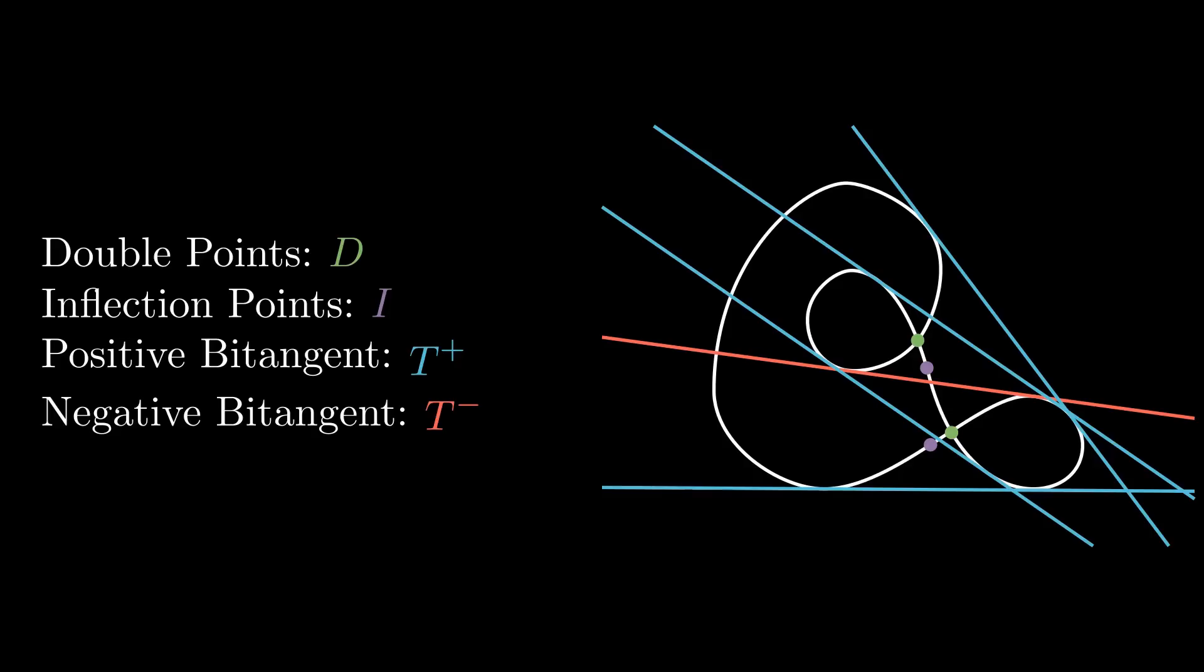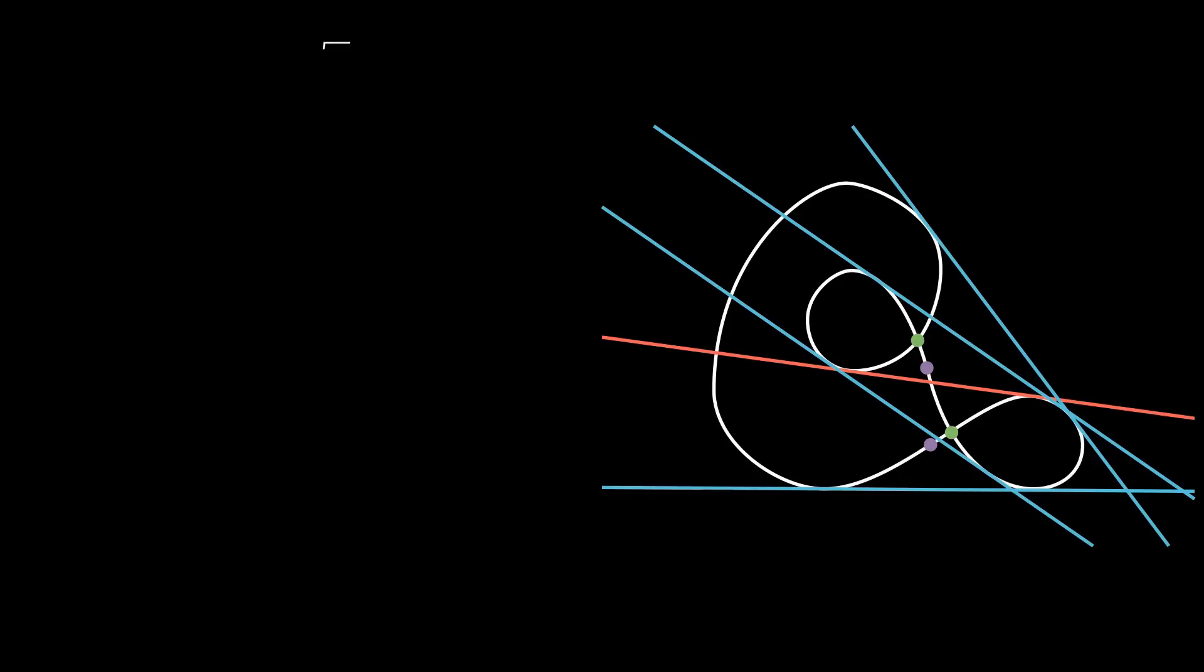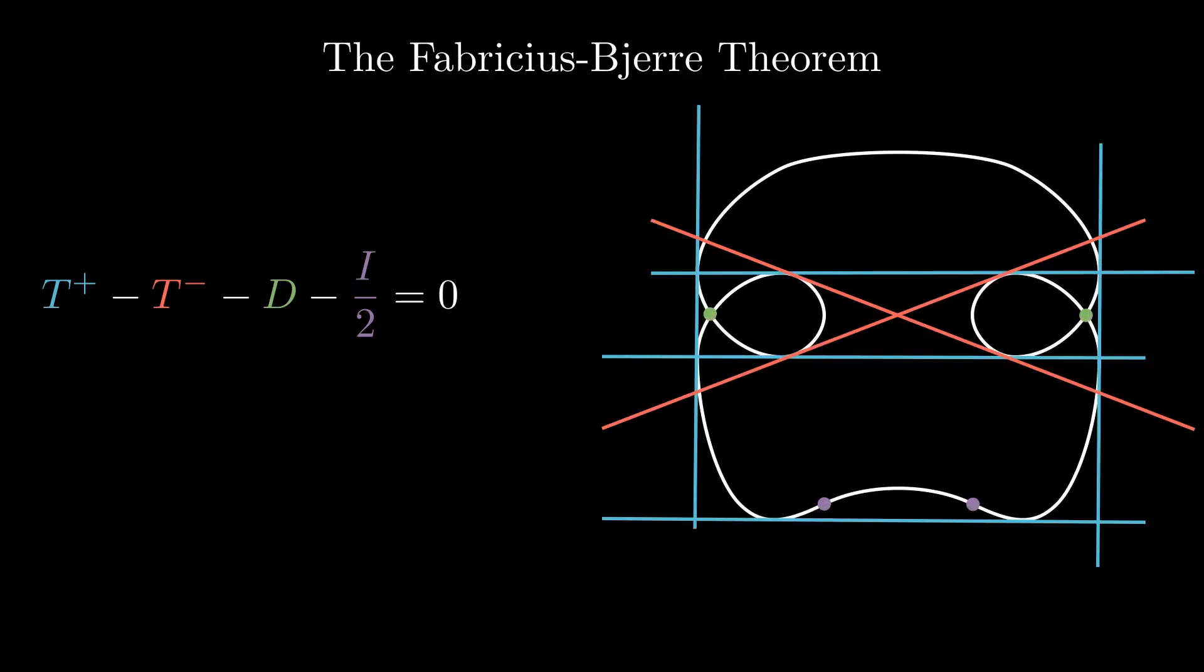With these terms defined, we can get to the main event of the video, the Fabricius-Bjerre theorem, which says T-plus minus T-minus minus D minus I over two equals zero. And it's always zero, for all smooth closed planar curves, no matter how you smush, or flip, or transform your curve.